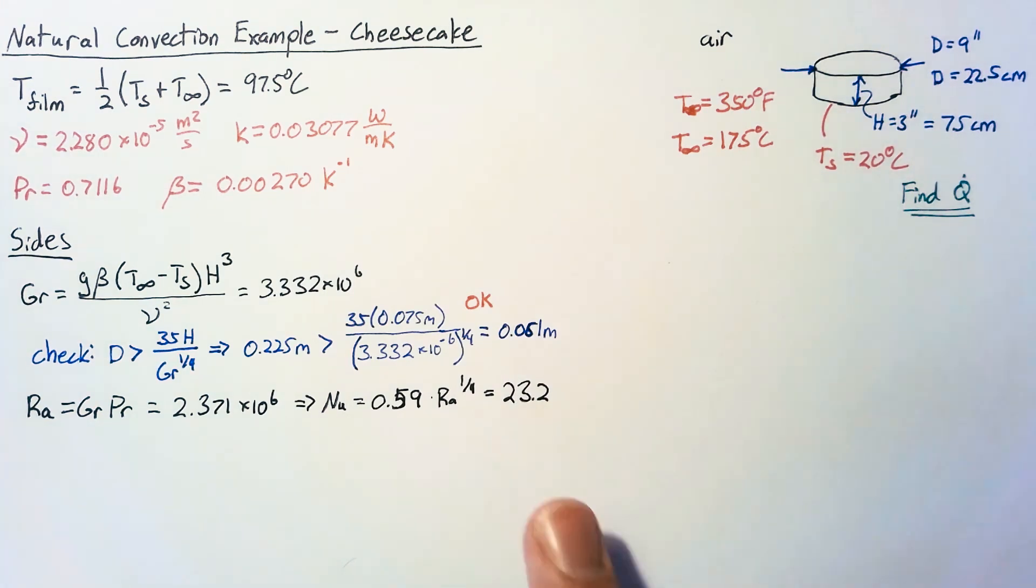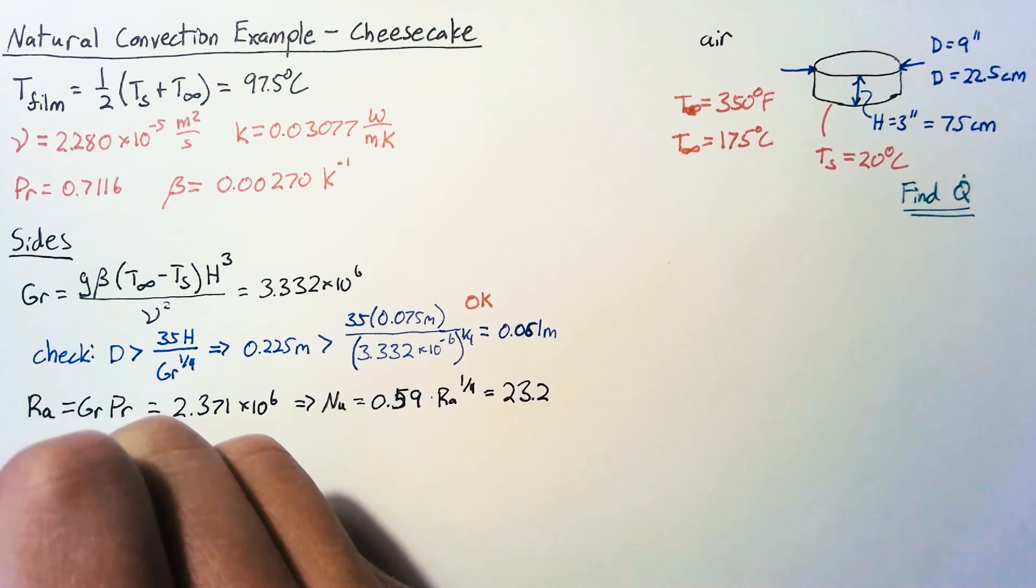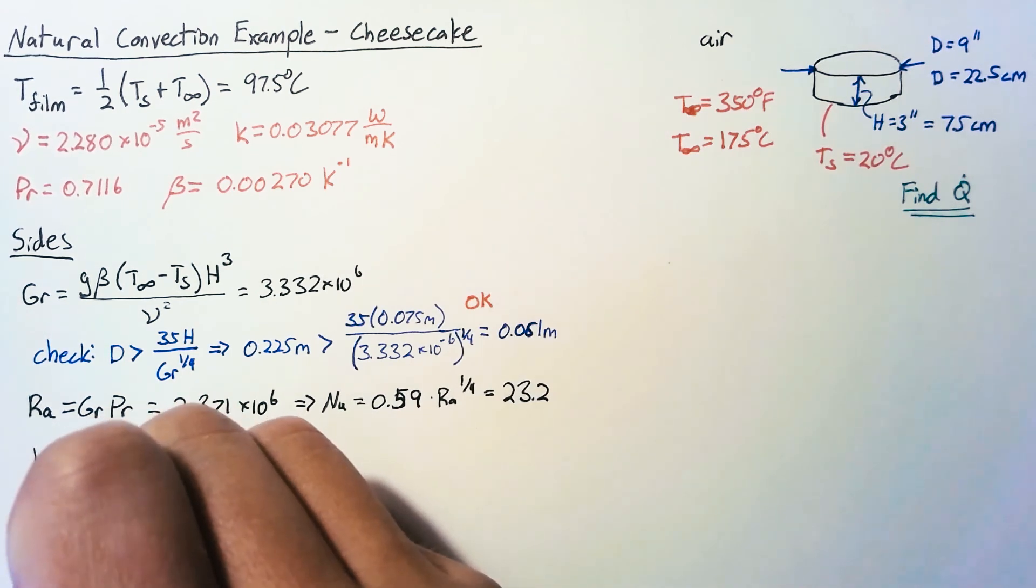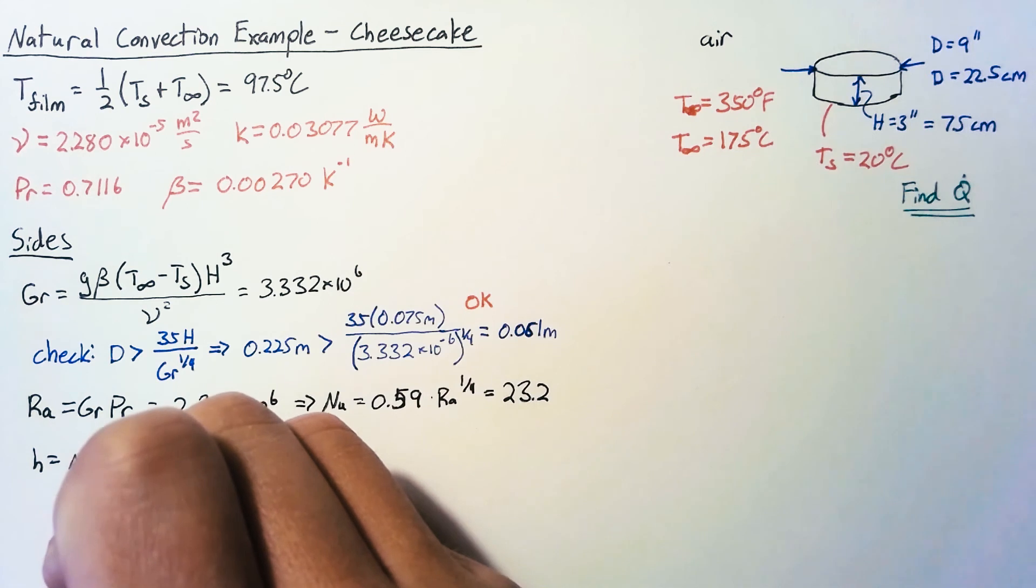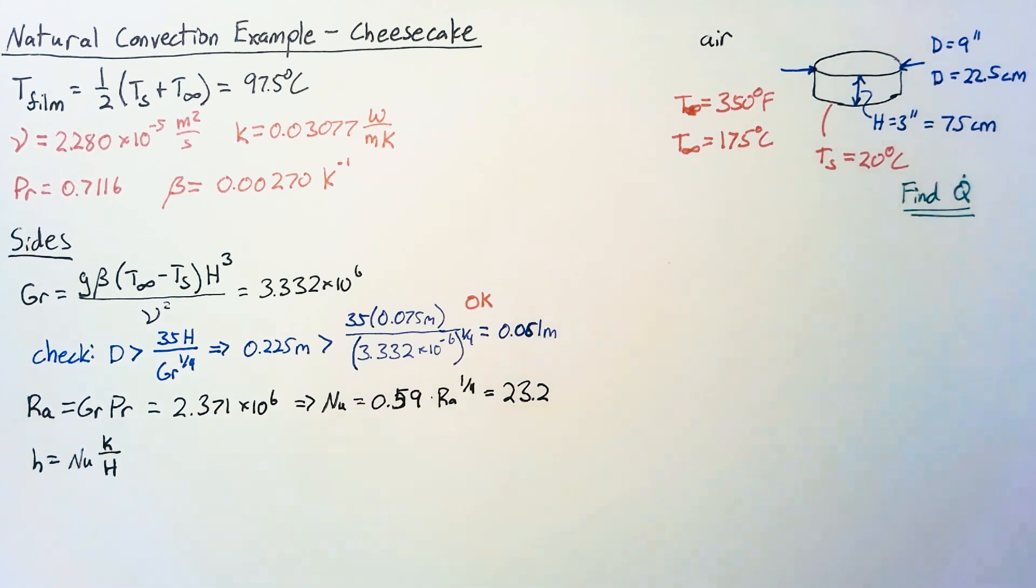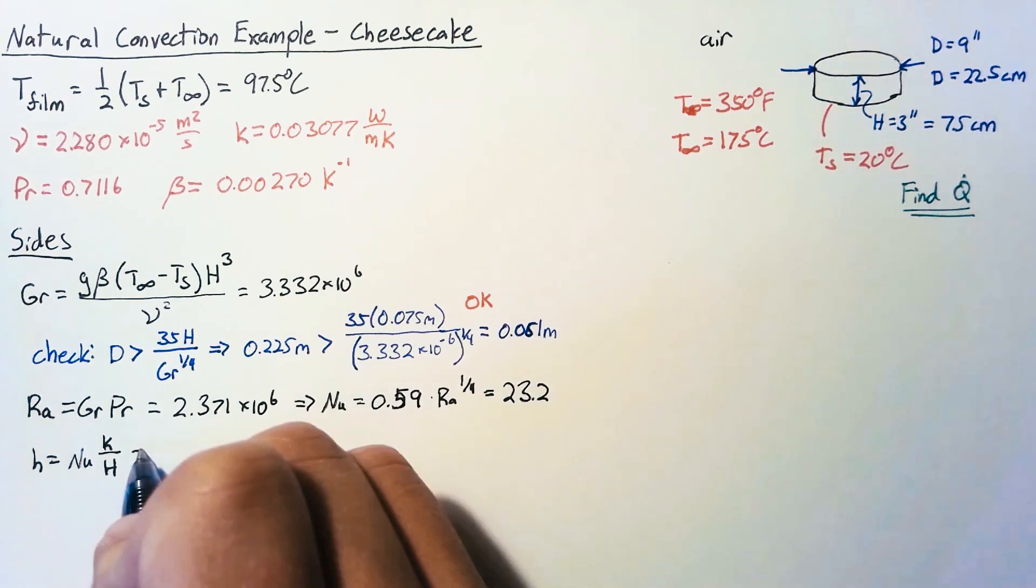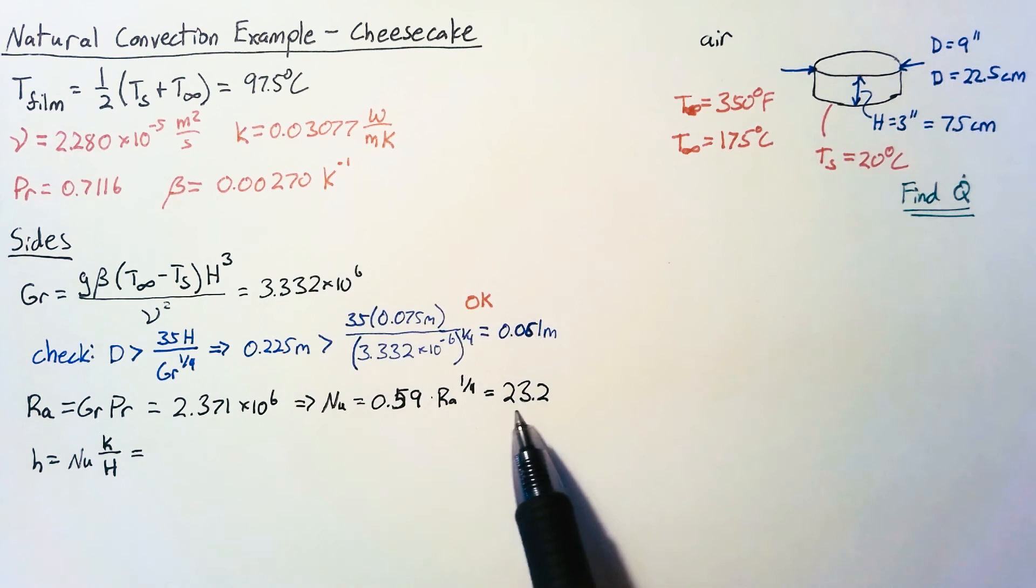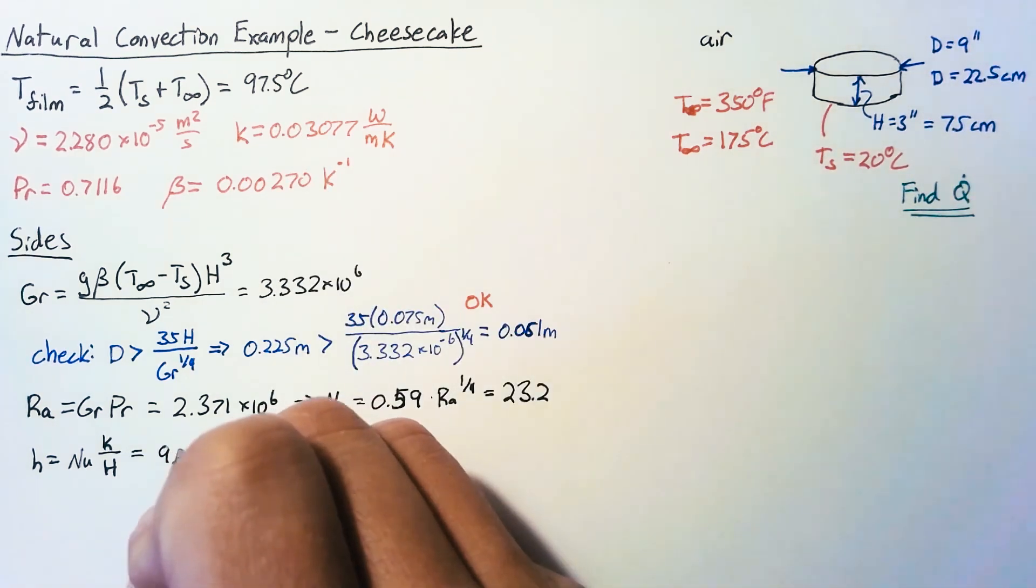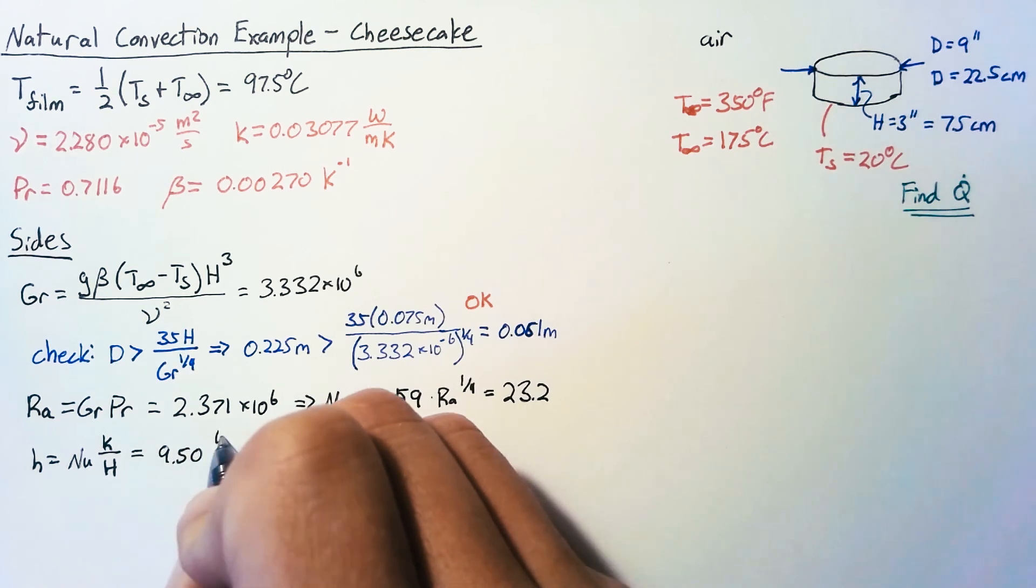Now once we have the Nusselt number we can use that to calculate H. And so H is just the Nusselt number multiplied by our thermal conductivity divided by our H value because we use whatever our characteristic length is.